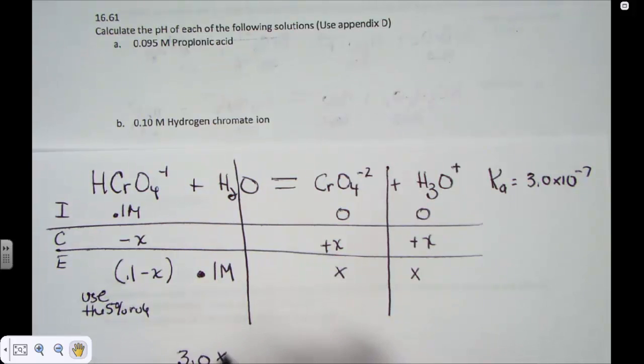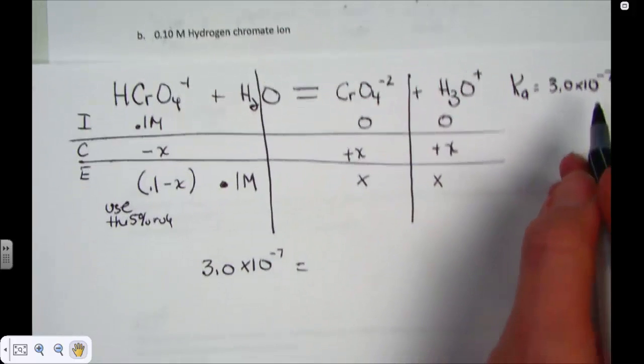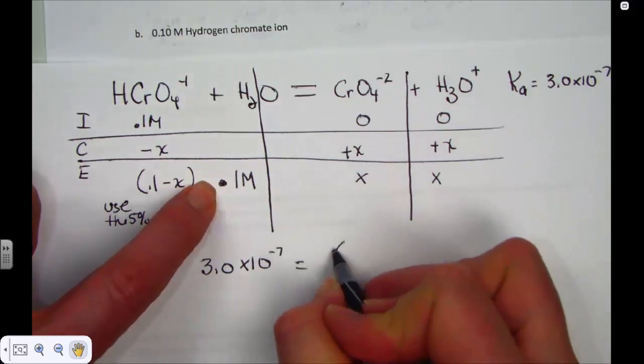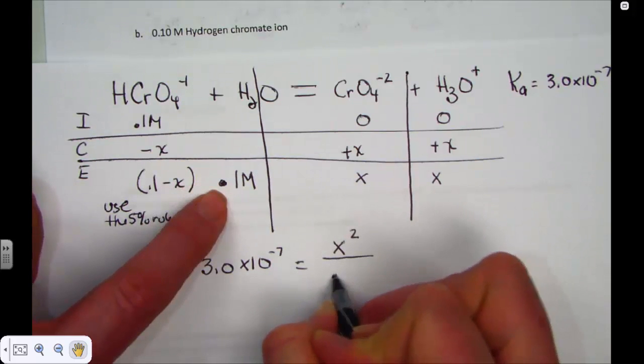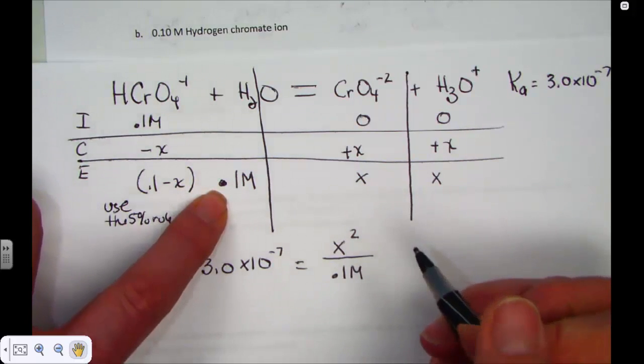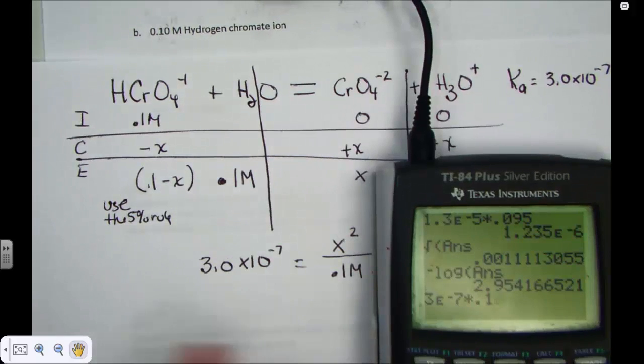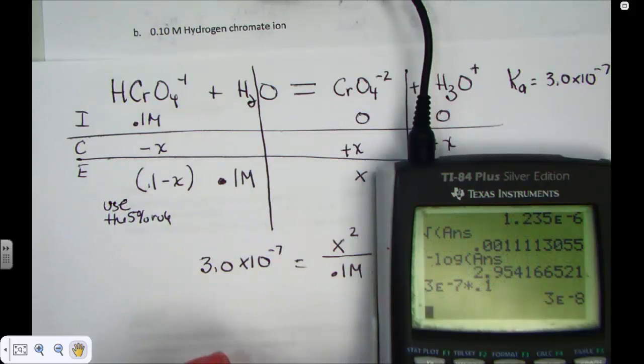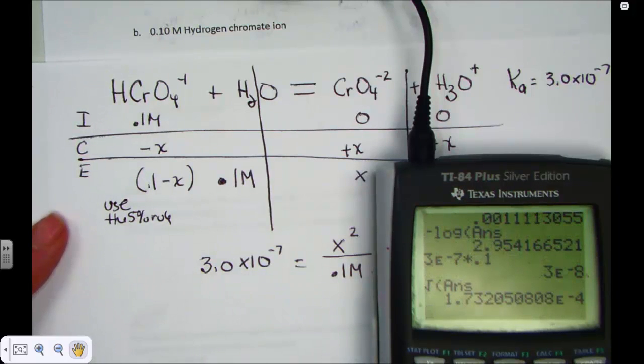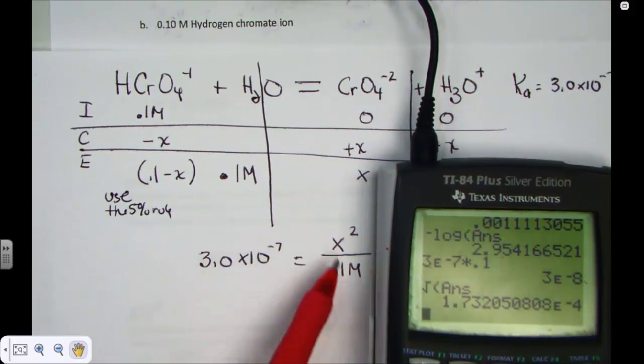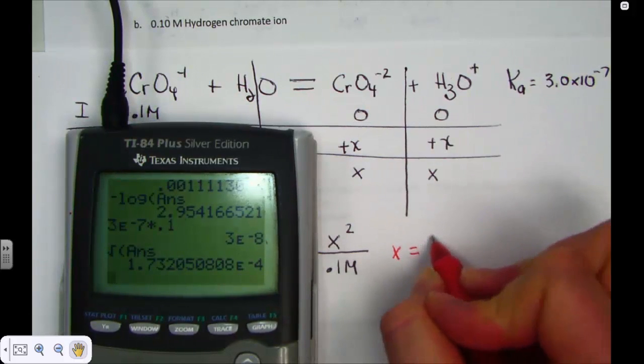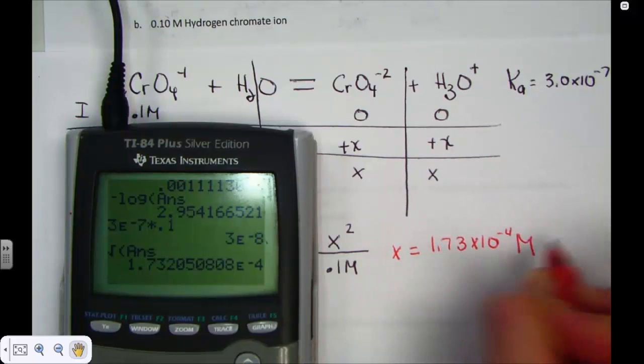So our given Ka, 3.0 times 10 to the negative 7th, provided from Appendix D, set equal to products over reactants, where X times X can be written just as X squared over the original value of 0.1. You could choose to do 0.1 minus X and use a quadratic equation, but I'm going to assume the 5% rule and then check my work. So 3E negative 7 times 0.1 is now X squared, square root that answer, and we get our value of X, 1.732 times 10 to the negative 4th.